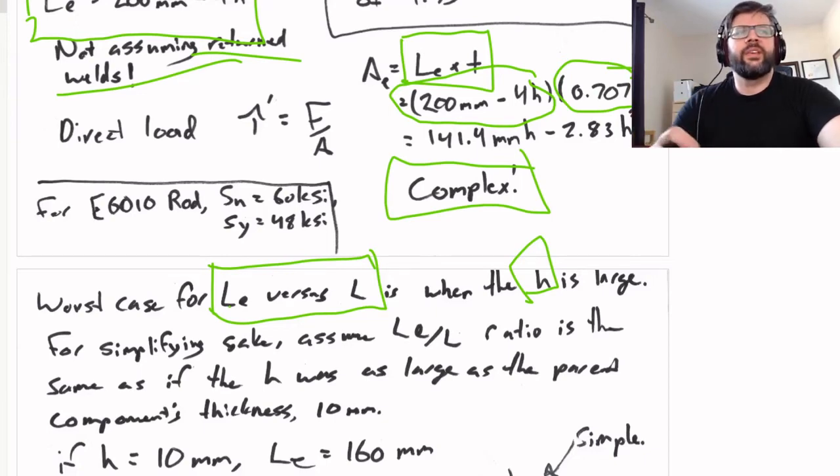So the direct load is just the force divided by the effective area. The effective area of the weld is LE times T, where T is 0.707H. LE is 200 minus 4H, which gives us an effective area of 141.4 millimeters H minus 2.83H squared. That's complex and annoying, so if we want to make a simplifying assumption, the worst case scenario we're going to see is if the H is rather large - the thicker the welds, the more length you're going to be lopping off there.